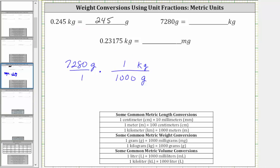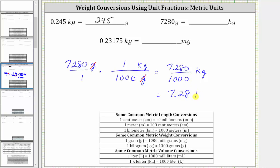the unit fraction is now one kilogram over 1,000 grams. Again, we have grams divided by grams, and therefore grams simplify out, leaving us with kilograms. So now we multiply, but notice this time we have a fraction. The numerator is 7,280 and the denominator is 1,000, and the units are now kilograms. 7,280 divided by 1,000 is equal to 7.28, giving us 7.28 kilograms. So 7,280 grams equals 7.28 kilograms.